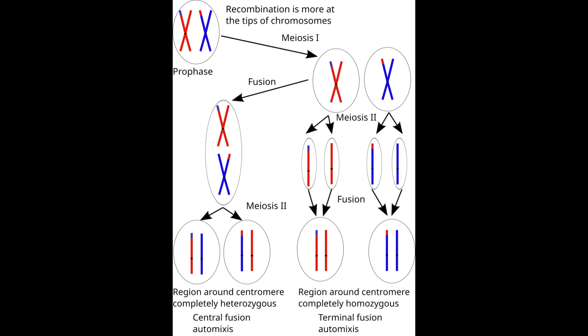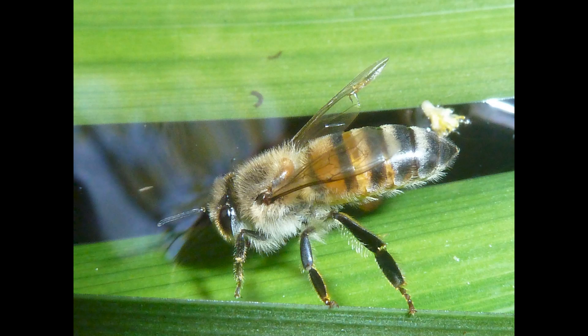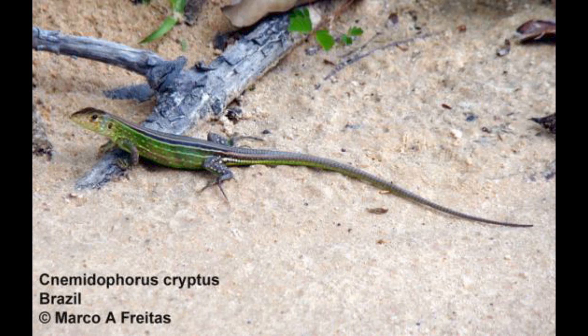Automixis can occur in a few different ways. One way is called central fusion automixis, in which the homologous chromosomes fuse back into a single cell after meiosis I, and terminal fusion automixis occurs when two chromatids fuse back into a single cell after meiosis II. One well-studied example of central fusion automixis is in the South African honeybee subspecies, Apis mellifera capensis, which gave rise to a lineage of asexual honeybees in 1990, parasitizing commercial Apis mellifera scutellata colonies in South Africa. Terminal fusion automixis has been reported in some mayflies, termites, oribatid mites, and some sharks like the swell shark. Finally, there is gamete duplication, in which an egg undergoes a round of genetic duplication without cellular division, reported in some hymenopterans and whiptail lizards of the genus Cnemidophorus.